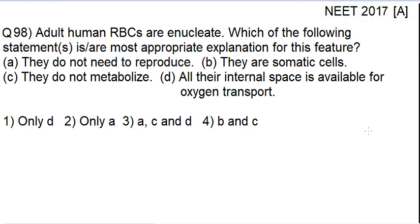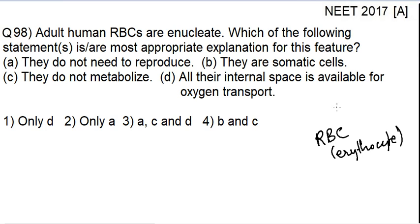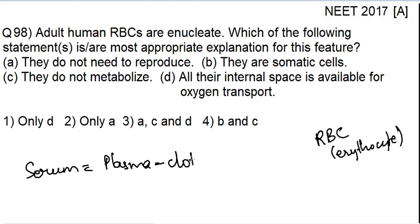What are RBCs and what is their function? RBC is also known as erythrocyte. It is one kind of blood cell. There are many blood cells: RBC, WBC, platelets, and plasma. Plasma is the liquid portion of the blood. Blood serum is plasma minus clotting factors. Among these blood cells, RBC is one of them.